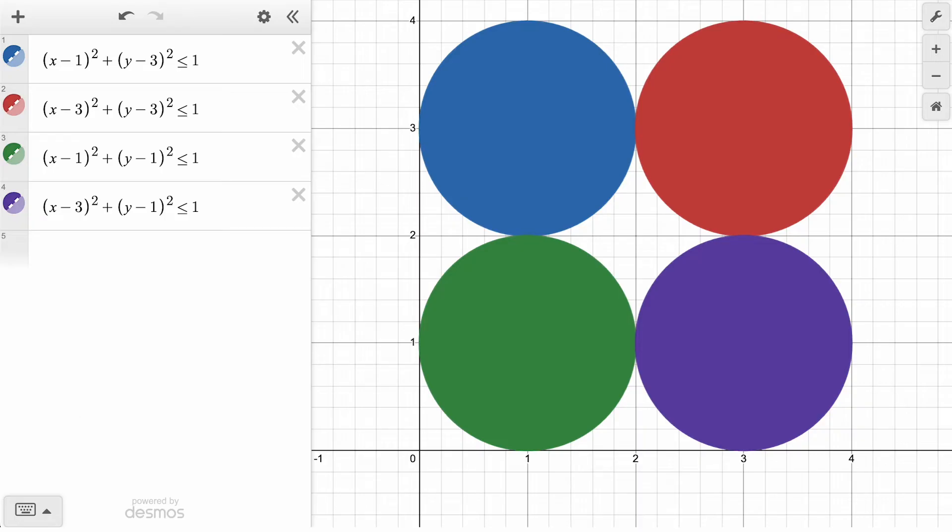Now we're ready to create our first custom color. Desmos has two different color functions, RGB, which stands for red, green, blue, and HSV, which stands for hue, saturation, value.